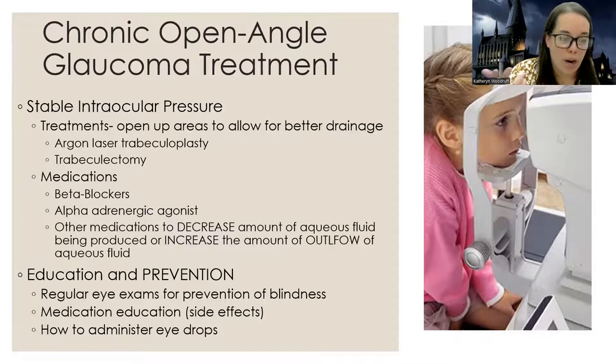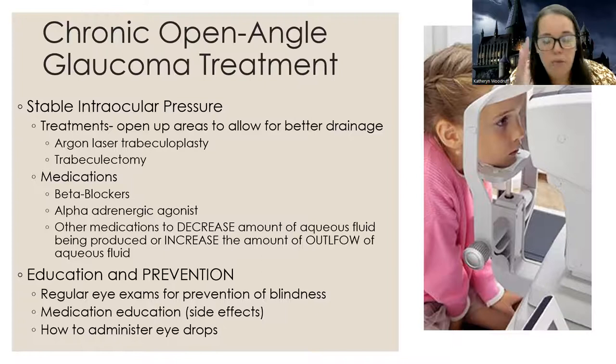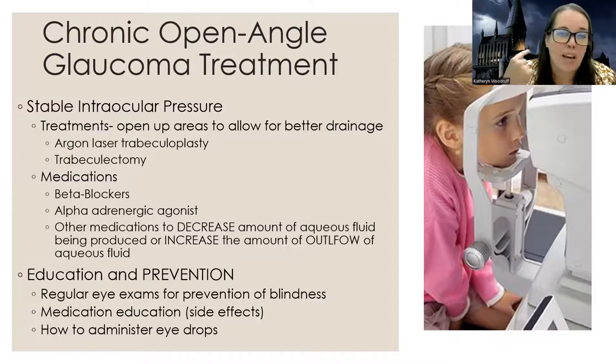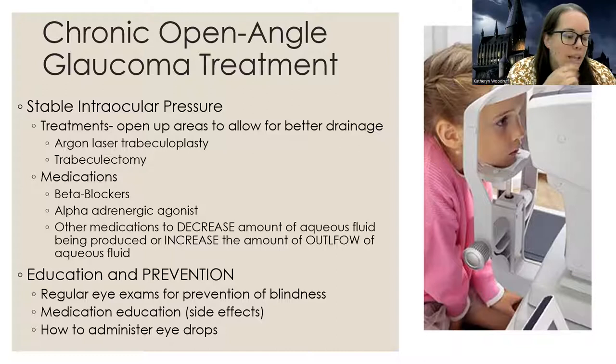Teach regular eye exams to check for changes in peripheral vision that may signal progressing glaucoma. Provide medication education on side effects and how to take eye drops correctly. With alpha and beta blocker eye drops, they can be systemically absorbed if not applied correctly, so we definitely want patients to check their blood pressure and heart rate before. If their heart rate is less than 60 for those beta blockers, they are not going to take their glaucoma drops.